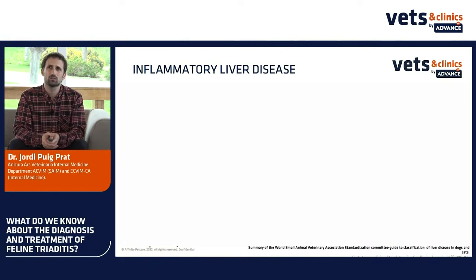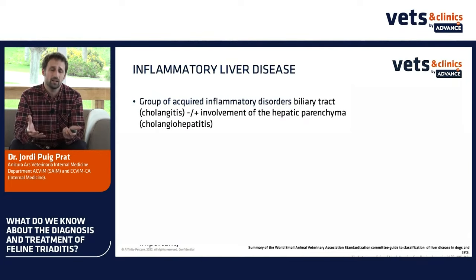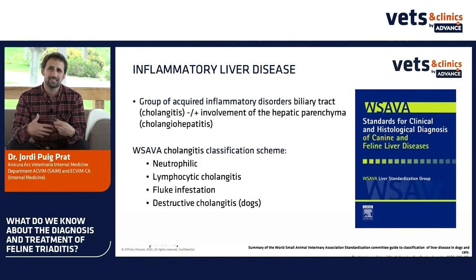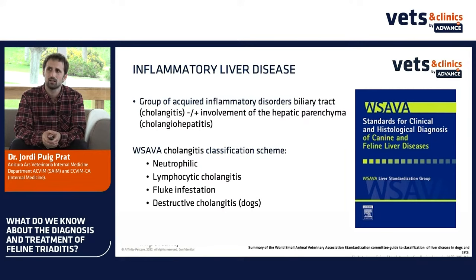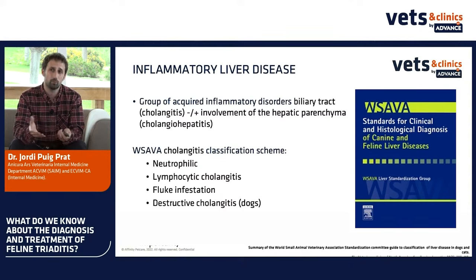We're going to start talking about inflammatory liver disease. Remember we have to always follow the World Small Animal Veterinary Association guidelines. When we talk about cholangitis, it's a group of acquired inflammatory disorders of the biliary tract, but when there is involvement of the hepatic parenchyma, we're talking about cholangiohepatitis. There are four types of cholangiohepatitis: neutrophilic, lymphocytic, fluke infestation, and destructive cholangiohepatitis. The last one has been reported in dogs but not in cats.